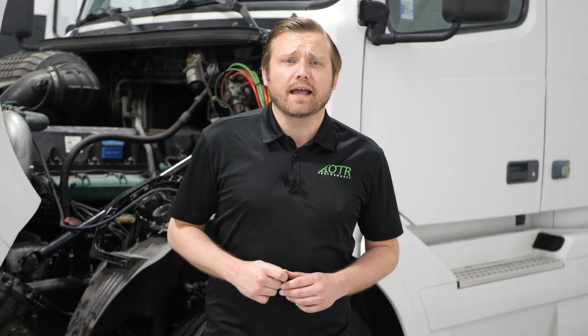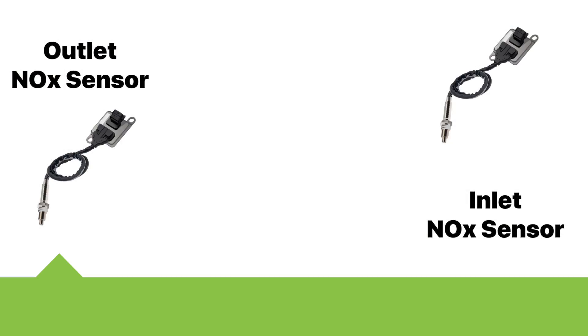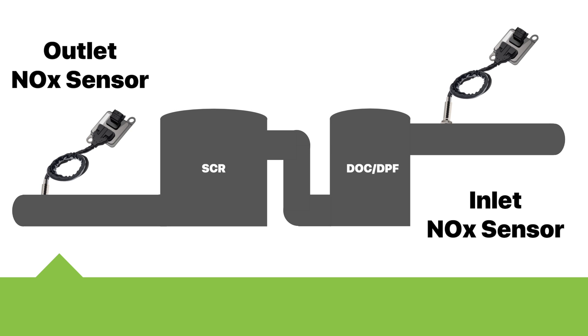This OBD monitor is designed to determine the DEF efficiency as calculated by using the inputs of the commanded DEF and the two NOX sensors located upstream and downstream of the NOX catalyst. Take a look at the inlet and outlet NOX sensor locations and make sure they are not damaged. Good NOX sensors can eliminate a lot of false positives on the SCR system. The inlet NOX sensor is located before your DOC/DPF system and the outlet NOX sensor is located after your SCR system.